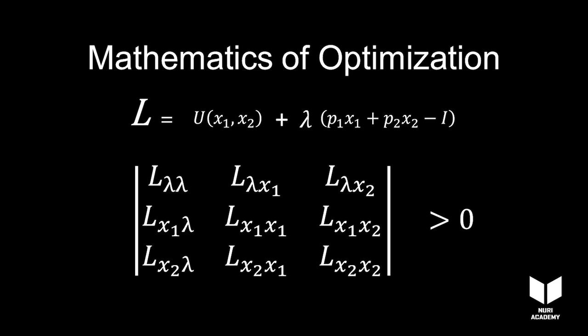Hessian looks more complicated than it actually is. If we look closer, we'll notice that in microeconomics problems, the first entry is always zero.